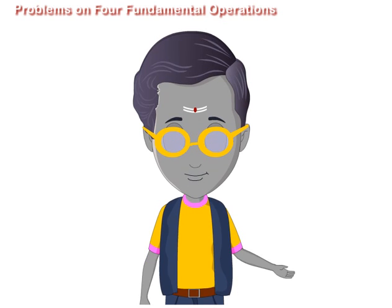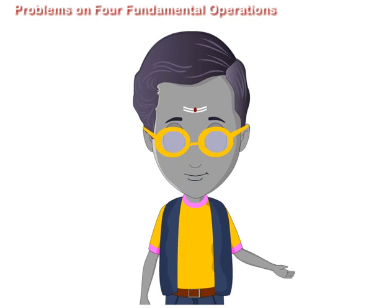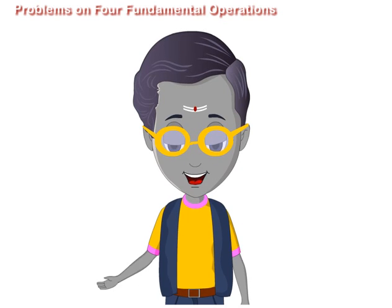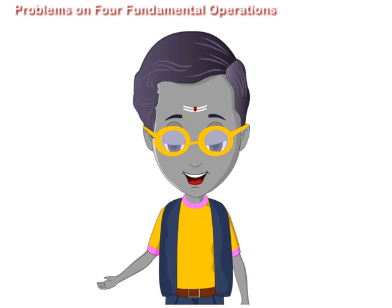When all the fundamental operations are given in a sum, the order of operations it follows is division, multiplication, addition, and lastly subtraction. Let us observe some examples.